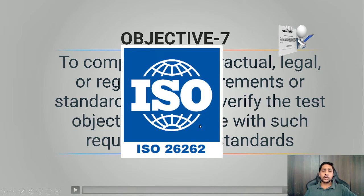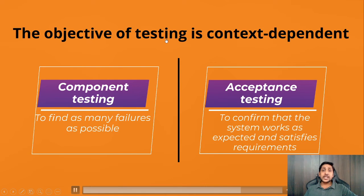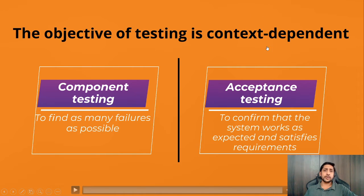An important note: the objectives of testing are context dependent. The seven objectives we studied are generalized objectives. They will vary depending on the testing level. For example, at the component testing level, your main objective may be to find as many bugs as possible. Whereas at the acceptance testing level, the objective is to confirm that the system works as expected and satisfies the requirements.